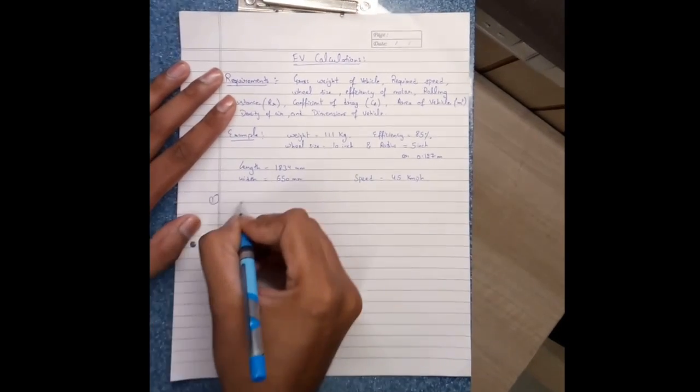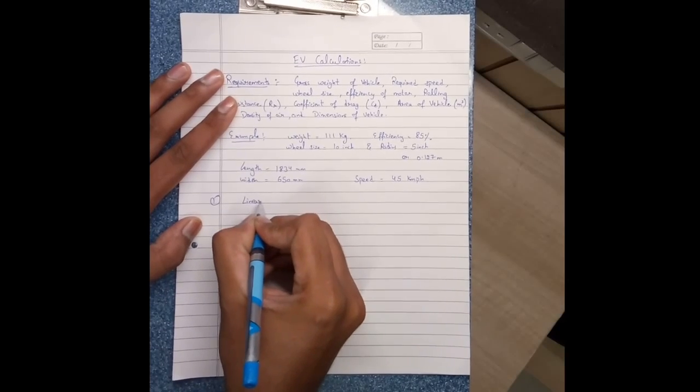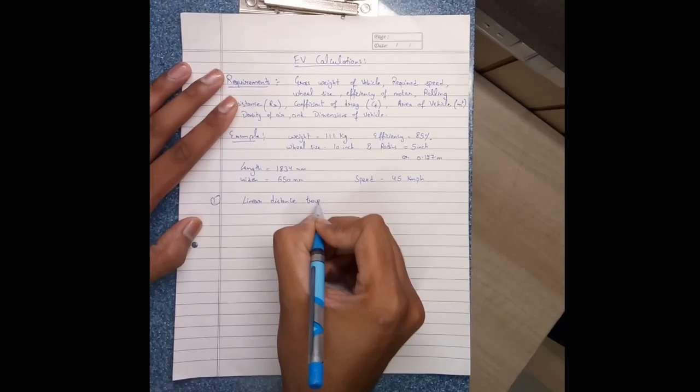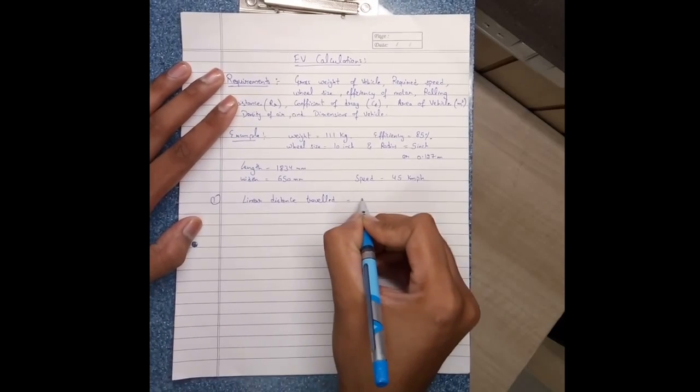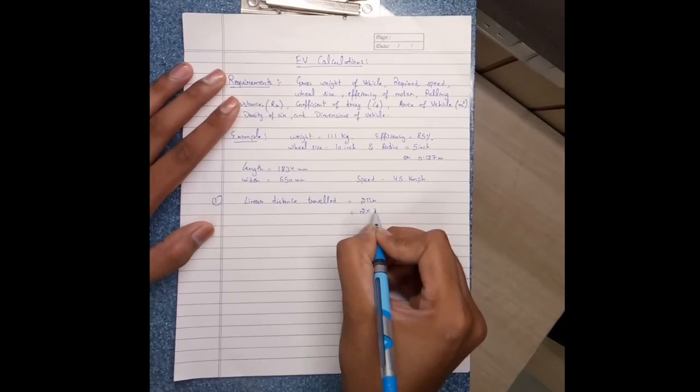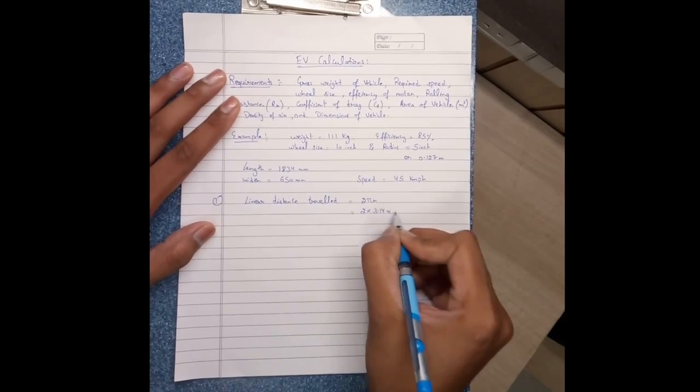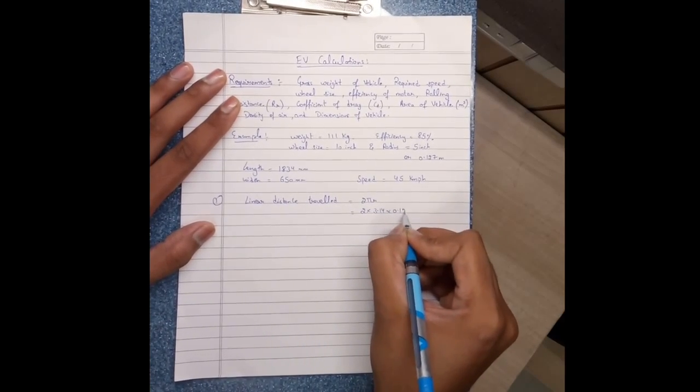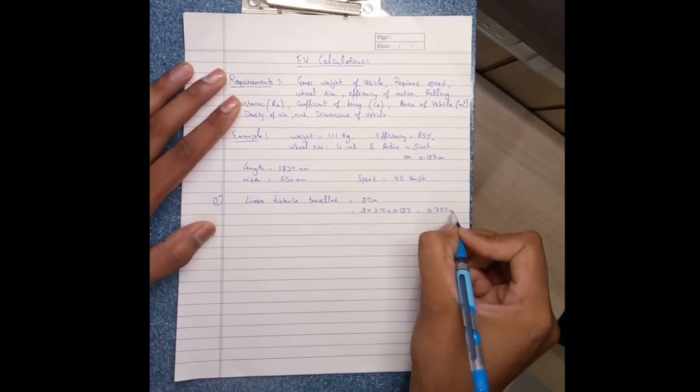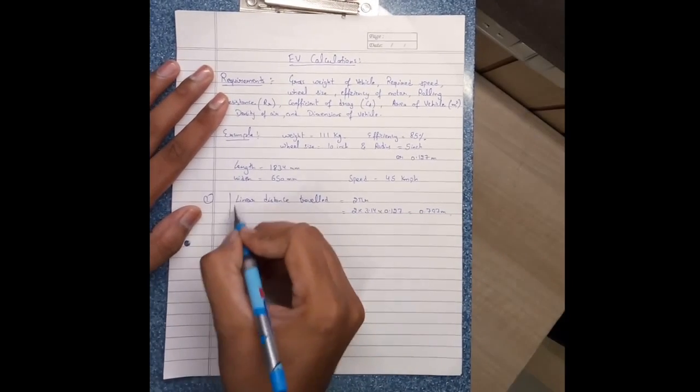First we will calculate linear distance travel. It's equals to 2πr, equals to 3.14 times 0.127, equals 0.797 meter. So linear distance travel comes to 0.797.